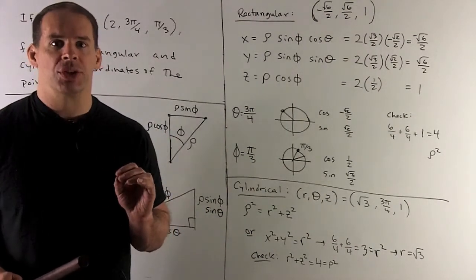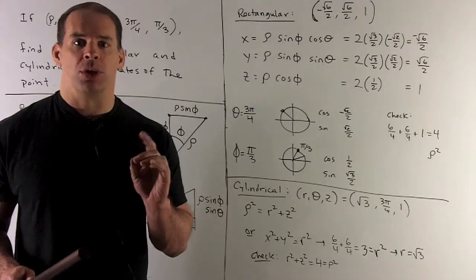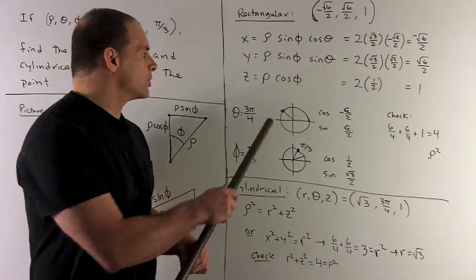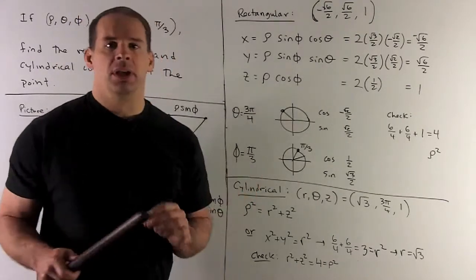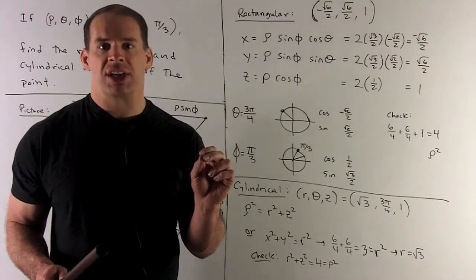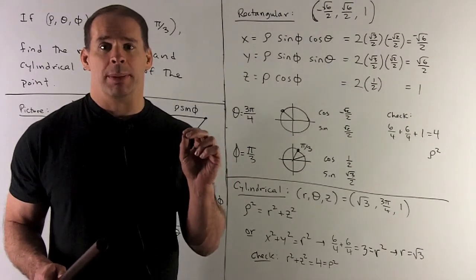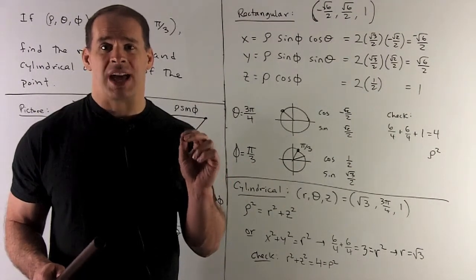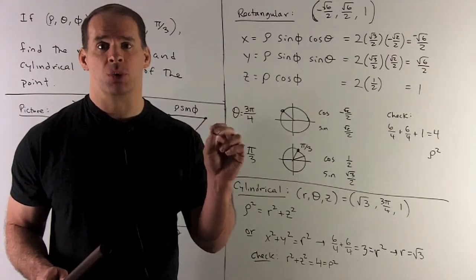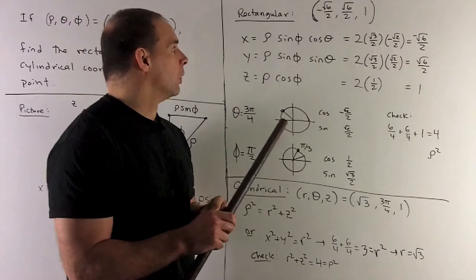Three pi fourths cosine and sine are going to be square root of two over two, and then we put signs in based on the quadrant. Three pi fourths is in the second quadrant, so the x value is negative, so cosine picks up a minus sign. The y value is positive, so sine stays as it is. So I have minus square root of two, comma square root of two.